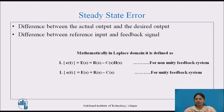This is for a non-unity feedback system. And for a unity feedback system, E(s) = R(s) − C(s).